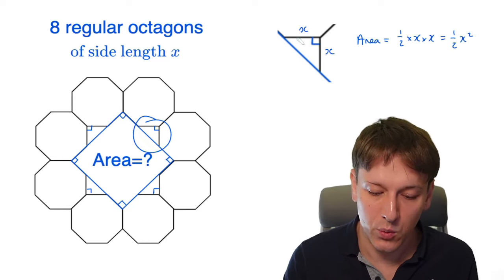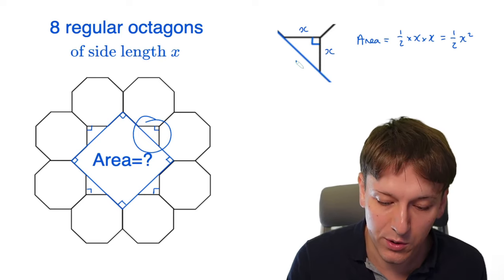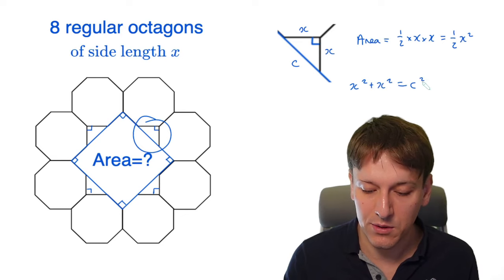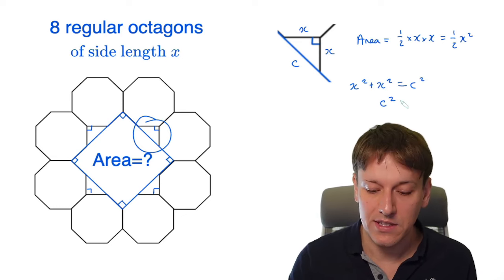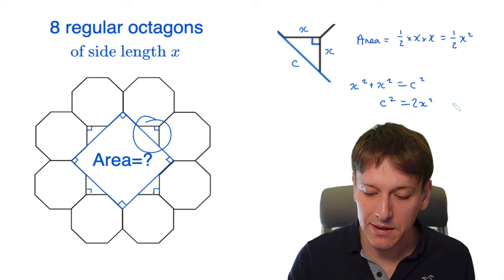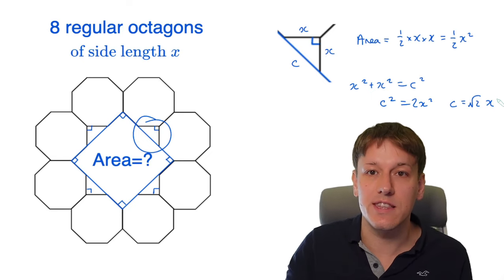But also, we know that it's a right angle triangle. So it obeys Pythagoras theorem. So if I call this hypotenuse c, we must have that x squared plus x squared equals c squared, or otherwise, c squared equals 2x squared. And that means that c is equal to the square root of 2 times x, taking the square root of both sides there.